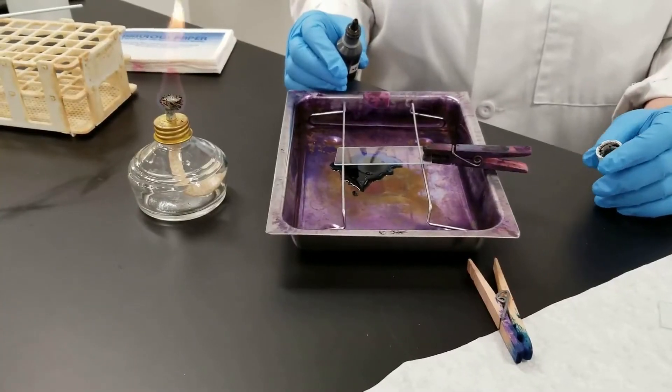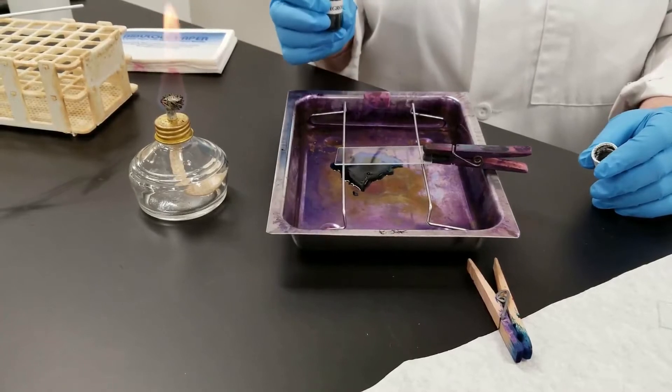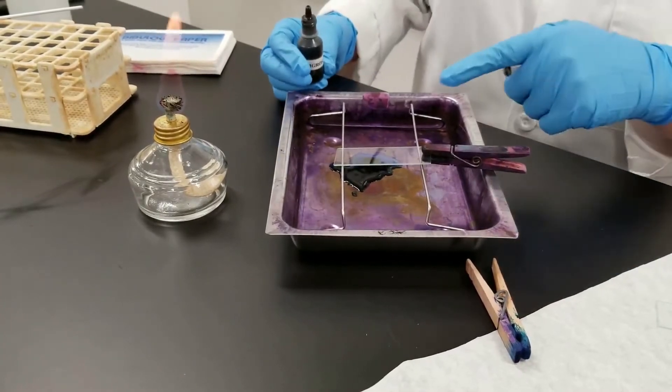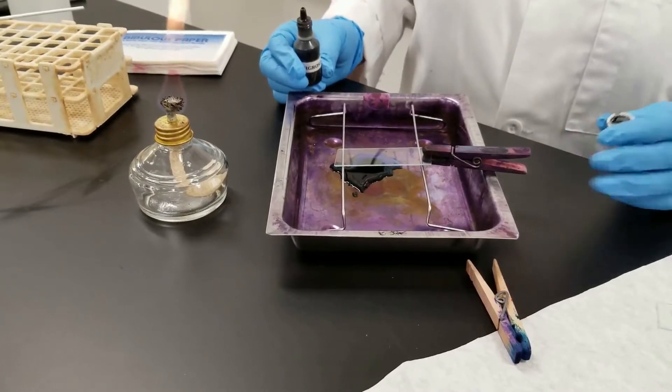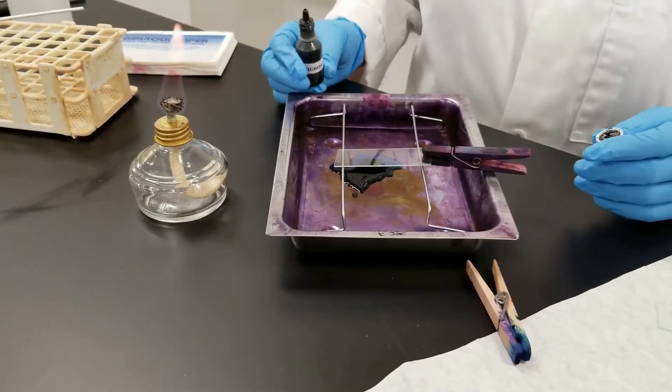So this is a negative stain. We're going to use the Di Negrosa. We have on our slide here the culture of Bacillus Megatarium. We've already smeared it on there so it's ready to go.